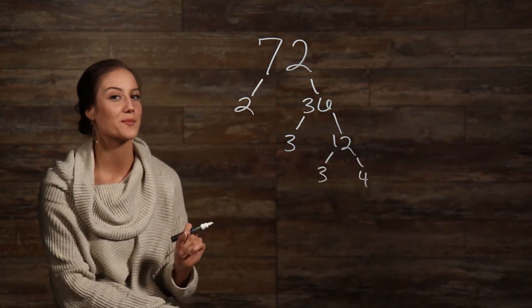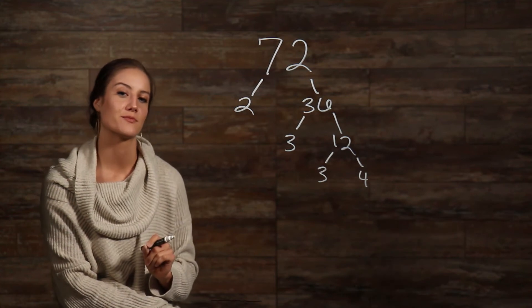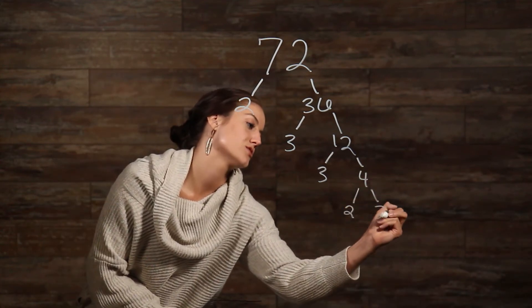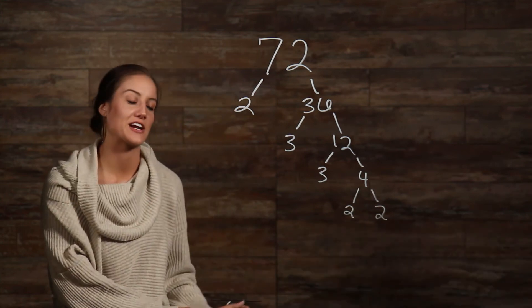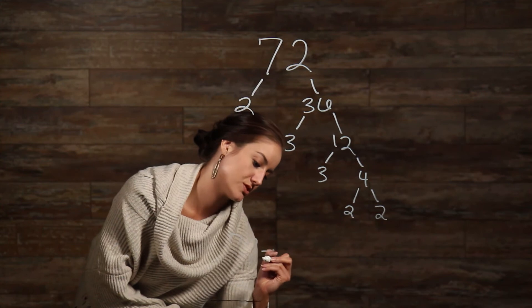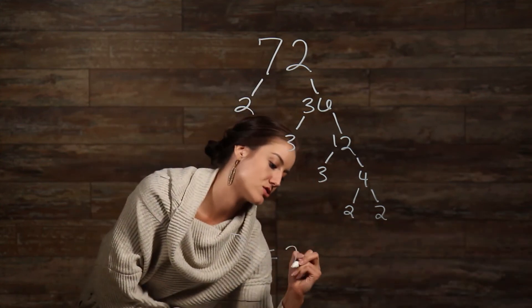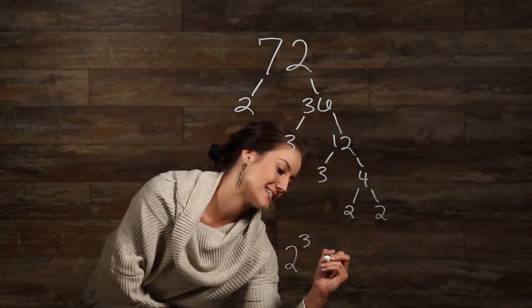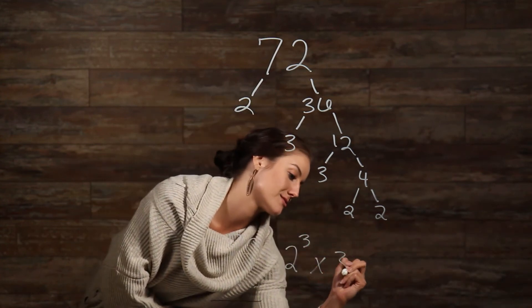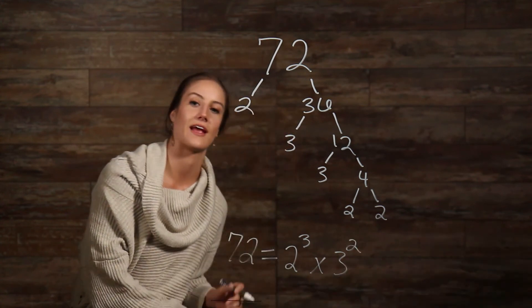But, yet again, 4 is not a prime number, so we need to go further. 2 goes into 4, 2 times. So, now we have our answer. 72 is equal to, we have 3 twos here, so we can write that as 2 to the 3rd times, we have 2 threes here, so we can write that as 3 squared. And there's our answer.